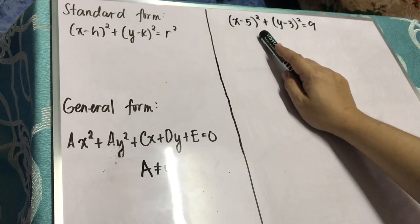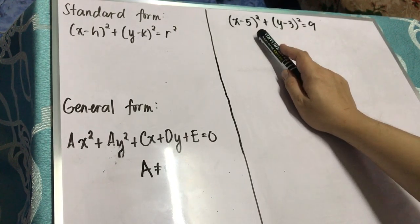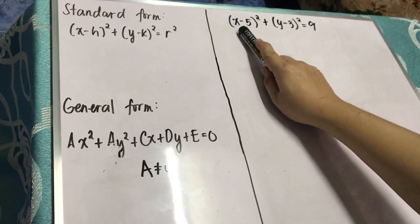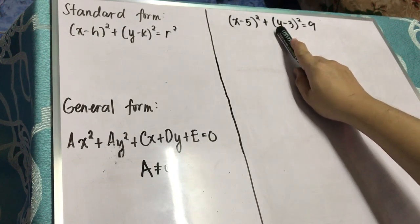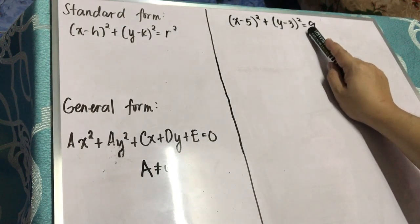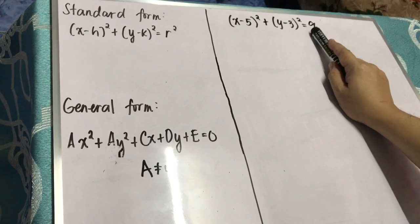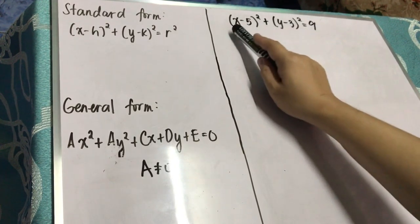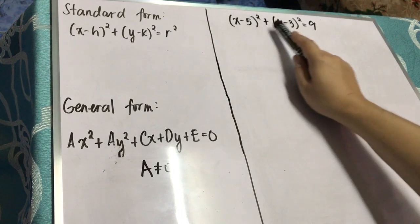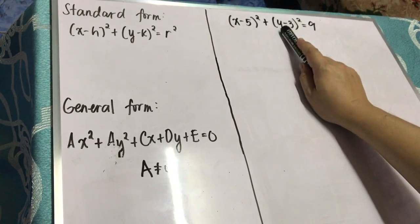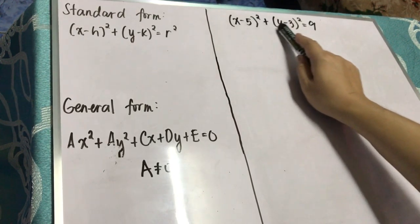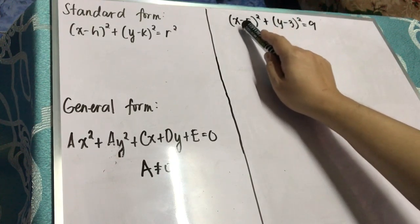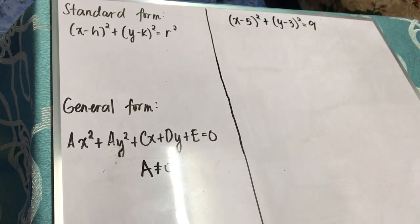But the question is, how are we going to convert from standard to general? Let's have an example. I have here an equation in standard form: the quantity of x minus 5 squared plus the quantity of y minus 3 squared is equals to 9. The first thing that we need to do is expand the quantity of x minus 5 squared and the quantity of y minus 3 squared.